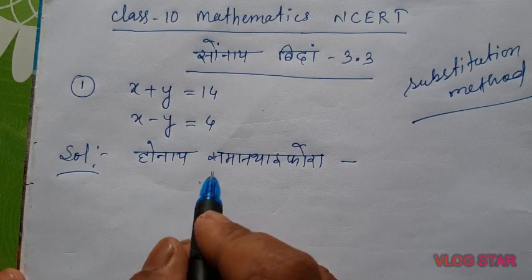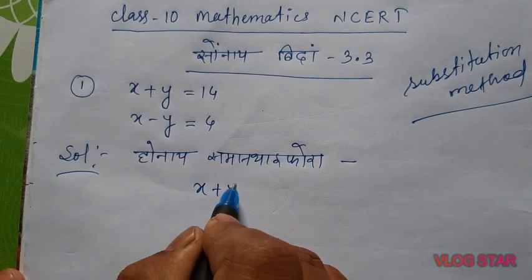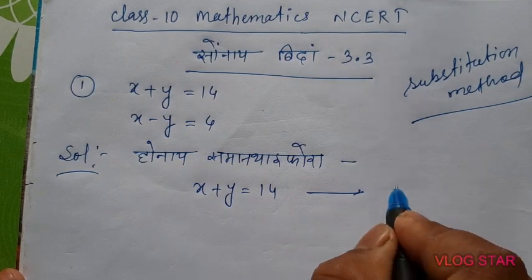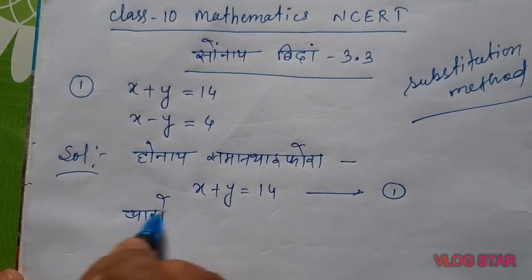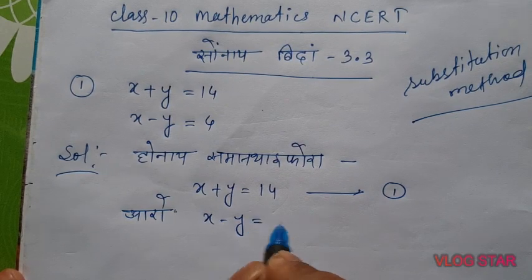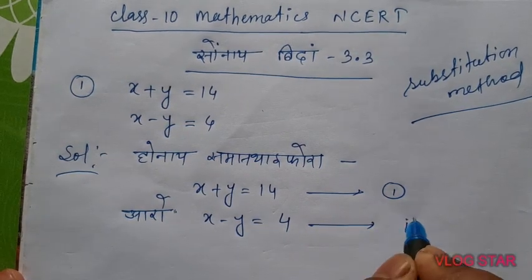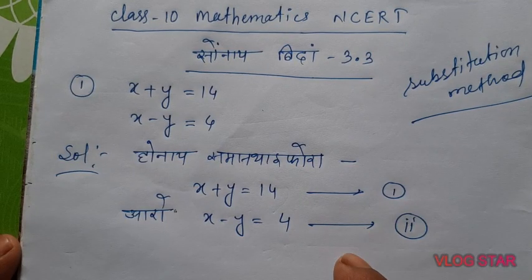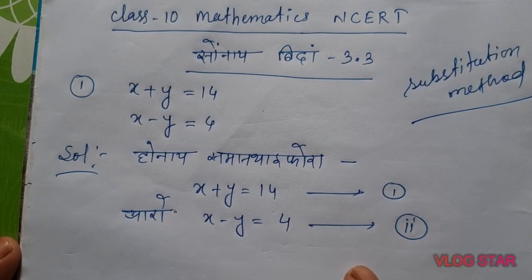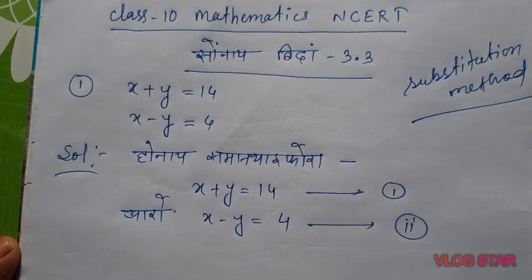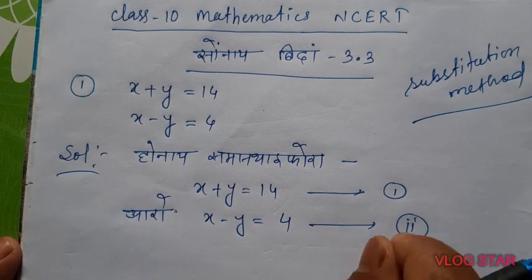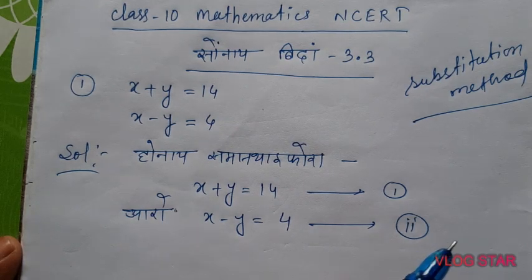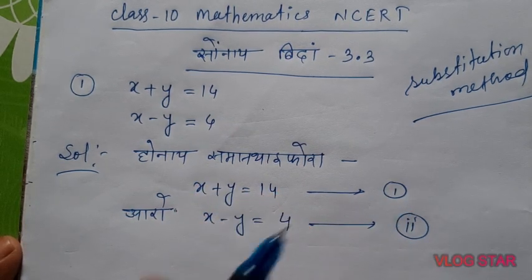We have x plus y equal to 14, and x minus y is equal to 4. If we have x minus y is equal to 4, then we proceed from there.